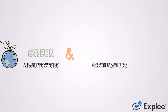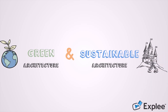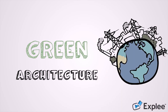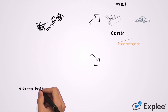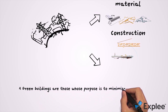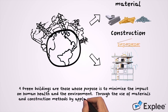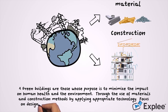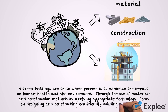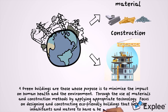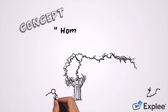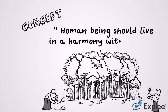What is green architecture and sustainable architecture and how are they different? Green buildings are those whose purpose is to minimize the impact on human health and the environment through the use of materials and construction methods. By applying approaches, technology focuses on designing and constructing eco-friendly buildings that help inhabitants and nature have a better quality of life. The concept of green architecture was born under the idea that human beings should live in harmony with nature.